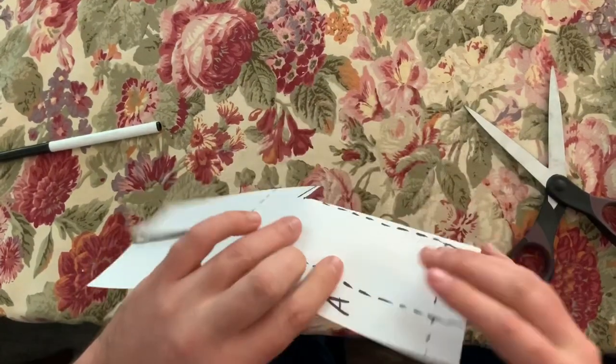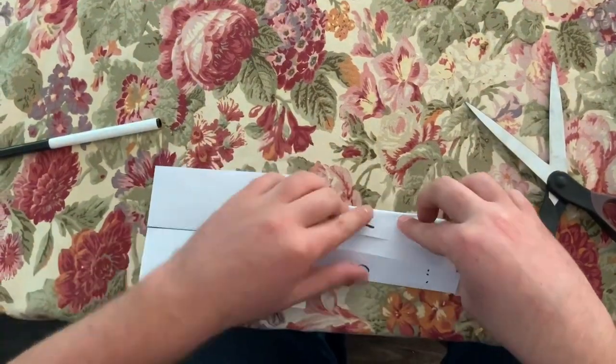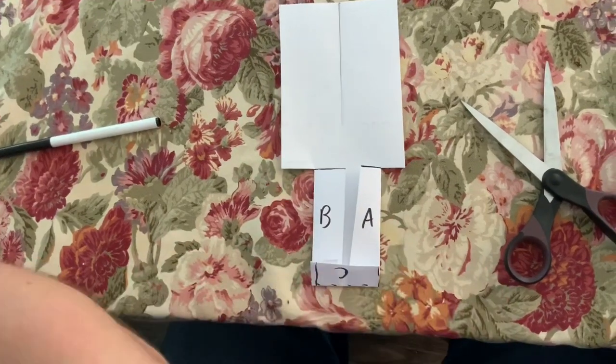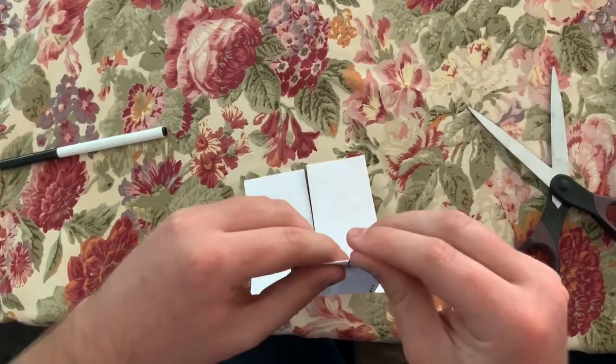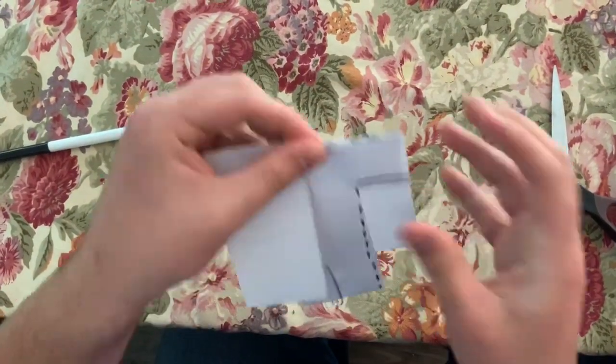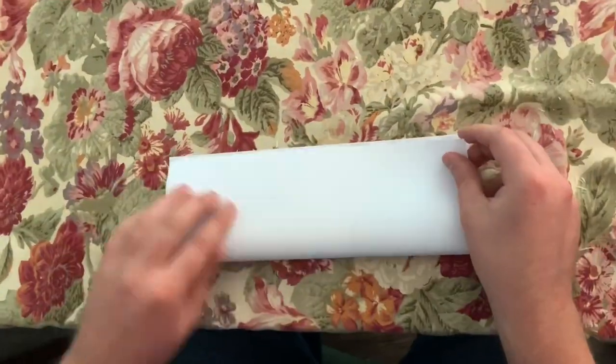Then you fold it along all the dotted lines like this. Make sure you have your parents help you with this because it gets kind of confusing. Take a paper clip and put it right at the bottom, right there to keep it all together. And there's a paper helicopter.